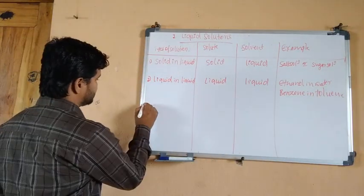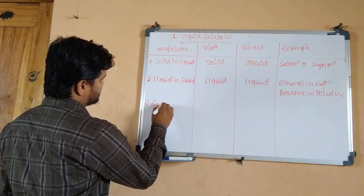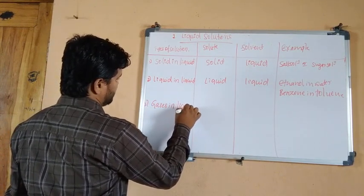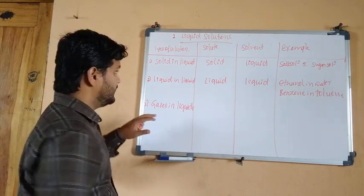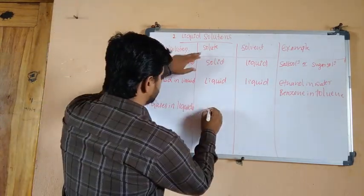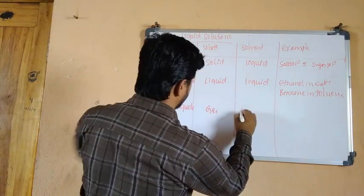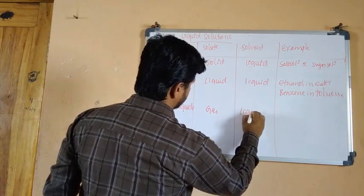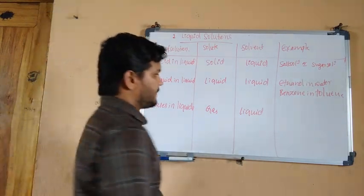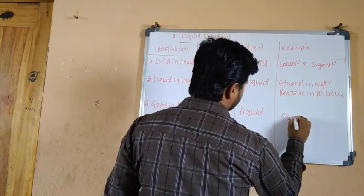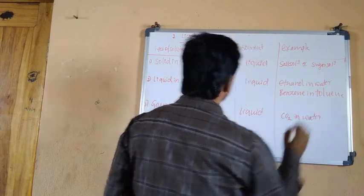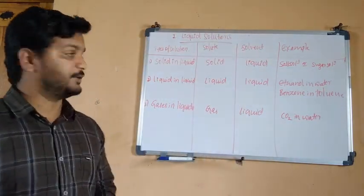The third type is gas in liquid — a gaseous solute in a liquid solvent. Here the solute is gas and the solvent is liquid. The example is carbon dioxide dissolved in water. This completes the liquid solutions.